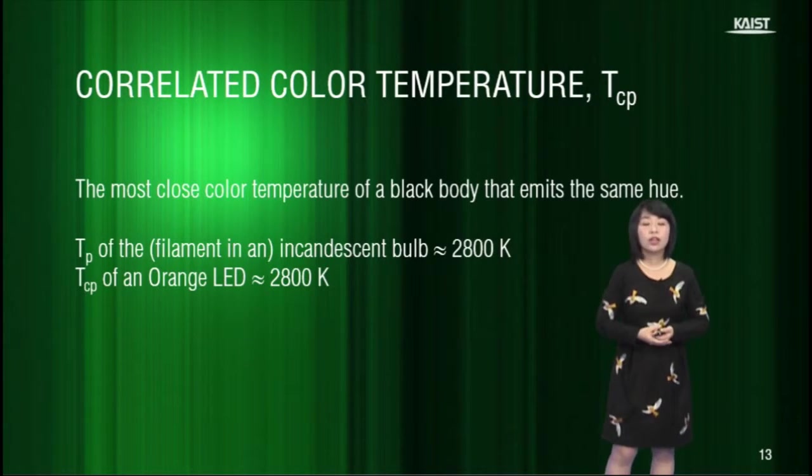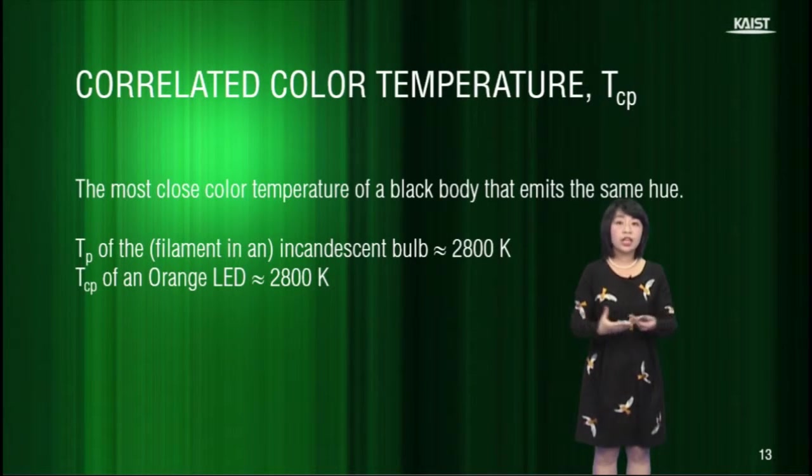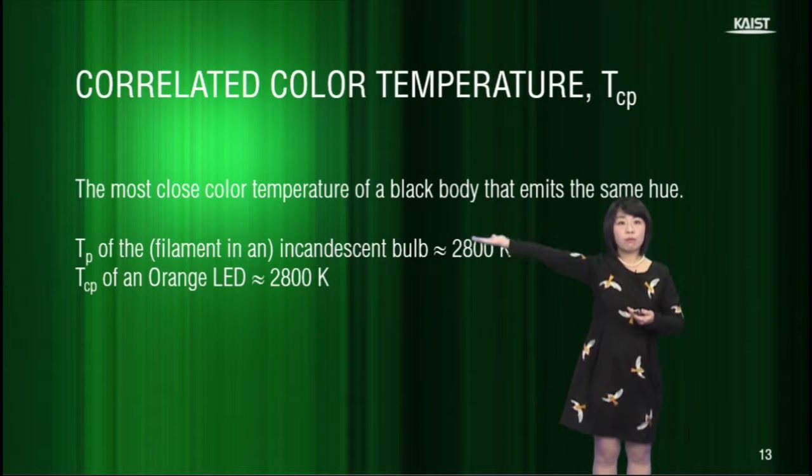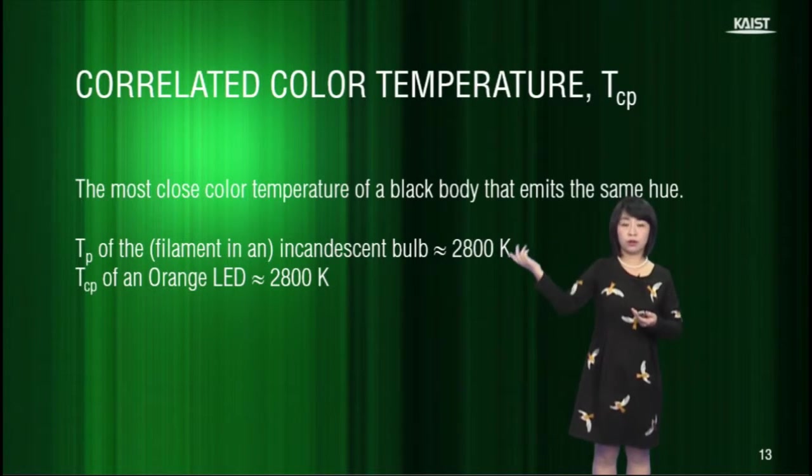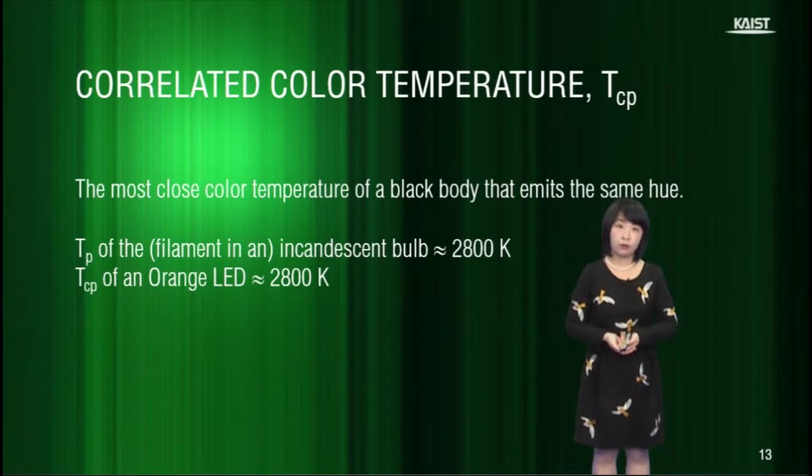Therefore, the color temperature of the sun as we observe on the earth is actually the correlated color temperature. The sun ray reaches our eyes after having passed through the atmosphere. The scattering in different ways results in different hues.